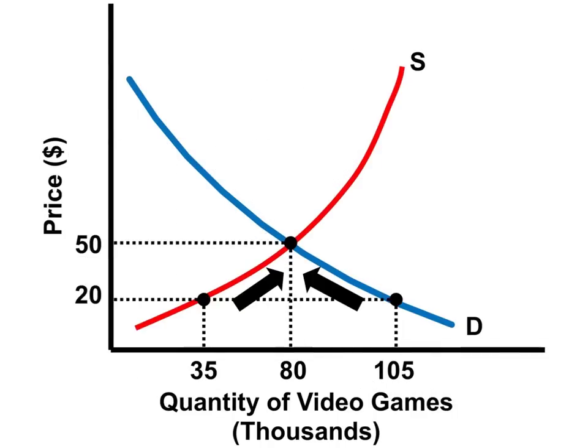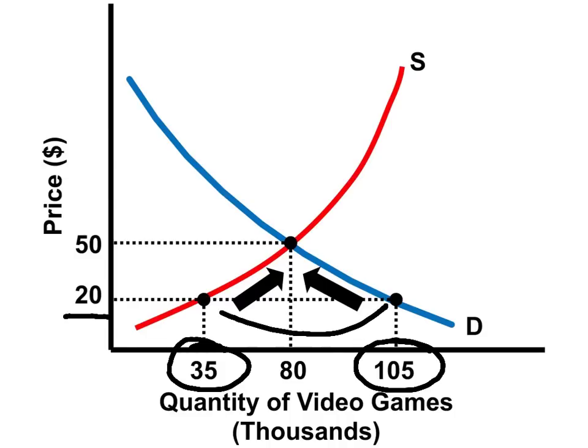Another example of a temporary disequilibrium would be if the price is less than the market price. Suppose that the price falls to $20. At $20, we have 105,000 video games that will be demanded by buyers. However, sellers are only willing and able to supply the market with 35,000 video games. We have a temporary shortage of 70,000 video games. Competitive market forces will push the price back up toward the market price of $50, and that will get rid of the shortage.